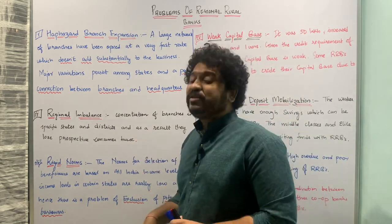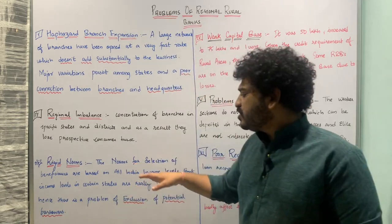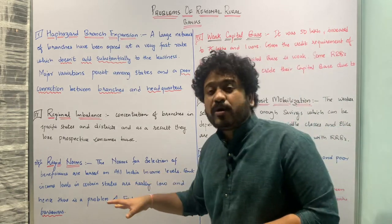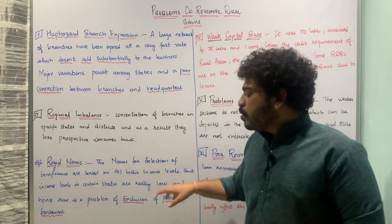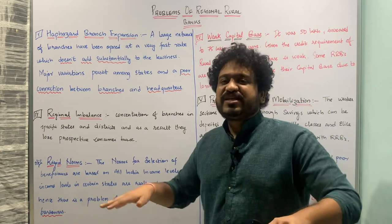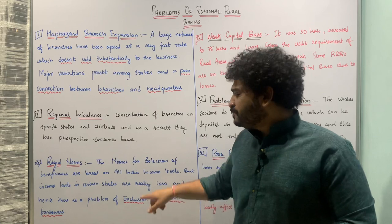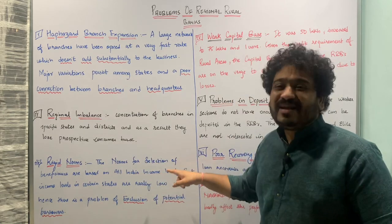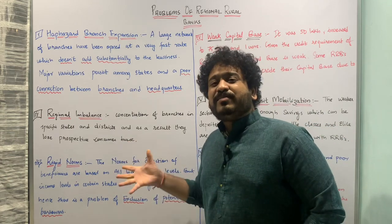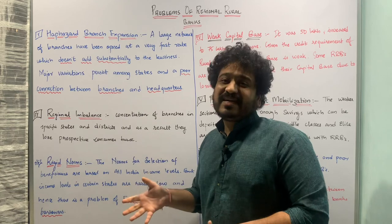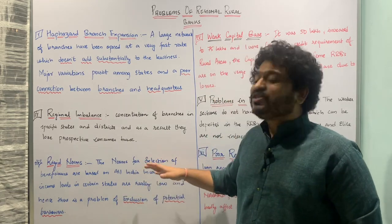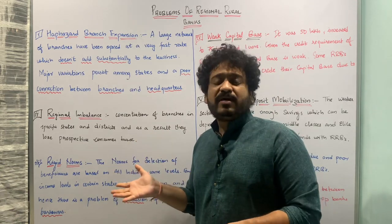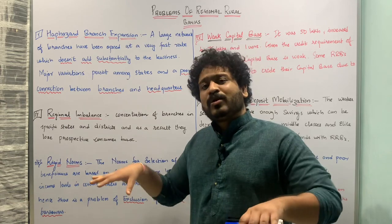The next point is rigid norms. These norms govern the selection of beneficiaries and are based upon the all-India income level. The problem is that income differs between states as well as within states. So when the norms for selection of beneficiaries are set at an all-India income level, certain beneficiaries who would otherwise qualify are not selected or eligible for the benefits of regional rural banks.